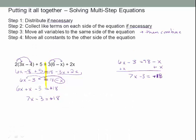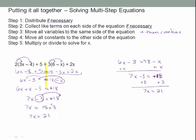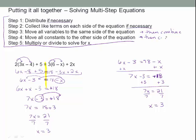Next, move all variables to one side. Adding x to both sides (or picking it up and moving it positive): 6x plus x is 7x minus 3 equals 18. Then move the constant — add 3 to both sides — giving 7x equals 21. Finally divide both sides by 7, and x equals 3.